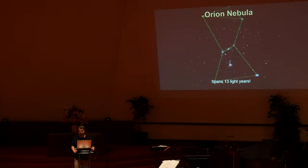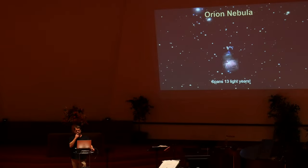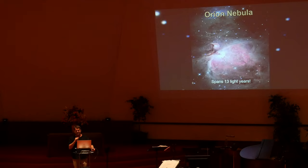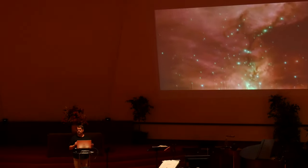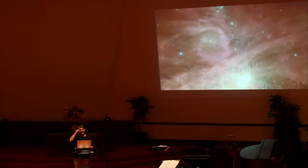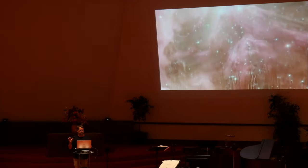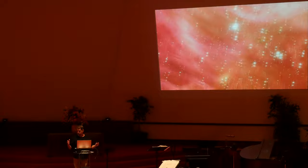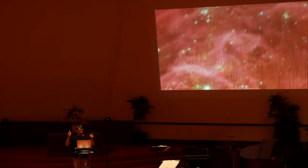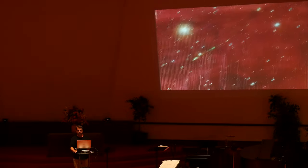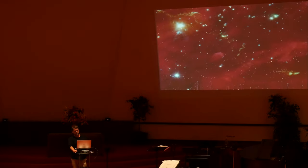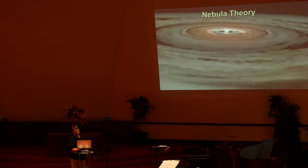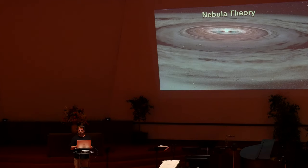Many of these nebulae are massive. Within the Orion constellation, we find the Orion Nebula, which spans 13 light years in size. A light year is the distance that light will travel in a year, traveling at 186,000 miles per second. Secular science claims that the solar system — both the planets and our sun — formed about 4.6 billion years ago through purely natural processes within one of these nebulae.